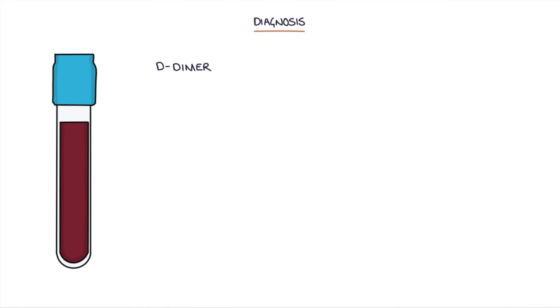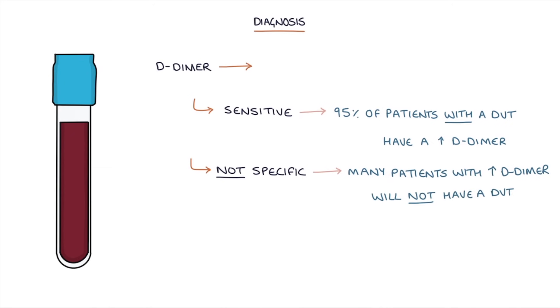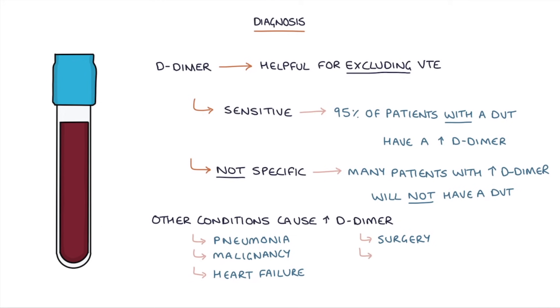Next, let's talk about making the diagnosis. A D-dimer is a blood test for a DVT that is sensitive — meaning that 95% of patients who have a DVT will have a raised D-dimer — but not specific, meaning that many patients with a raised D-dimer will not have a DVT. This makes it helpful in excluding venous thromboembolism where there is a low suspicion. Other conditions can also cause a raised D-dimer such as pneumonia, malignancy, heart failure, surgery, and pregnancy.